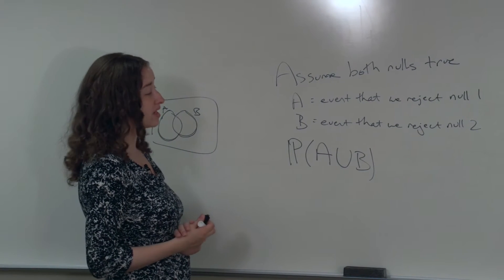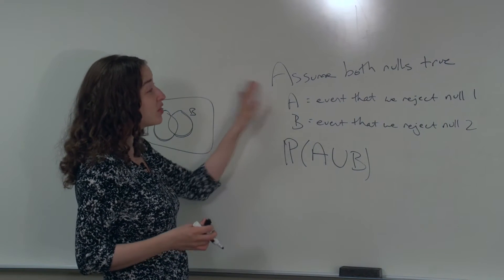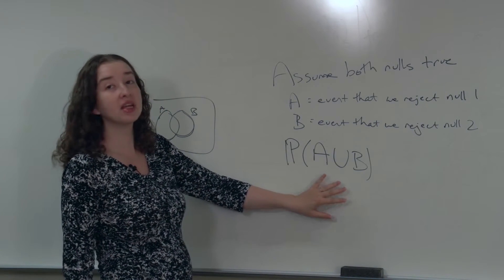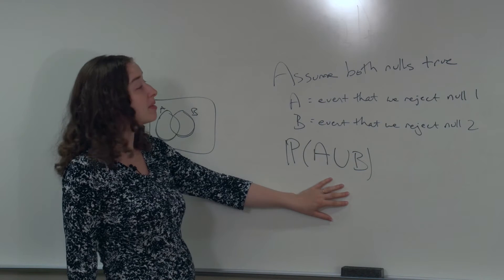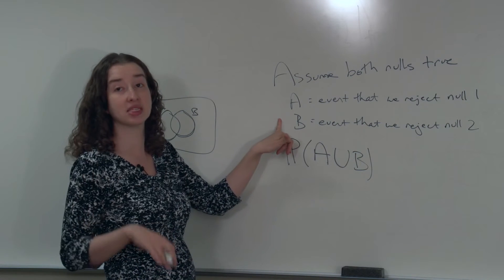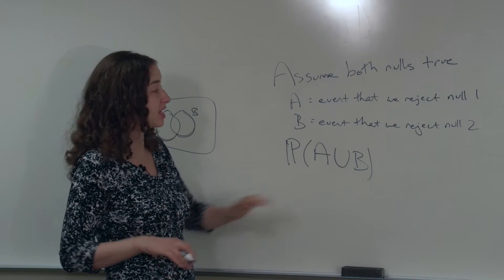Why is this the quantity that we're interested in? Because if both nulls are true, then rejecting either one of them is a mistake. So here we're talking about the probability of making at least one mistake - the probability that either we make a mistake and reject A or we make a mistake and reject B. This is the probability that we want to calculate.